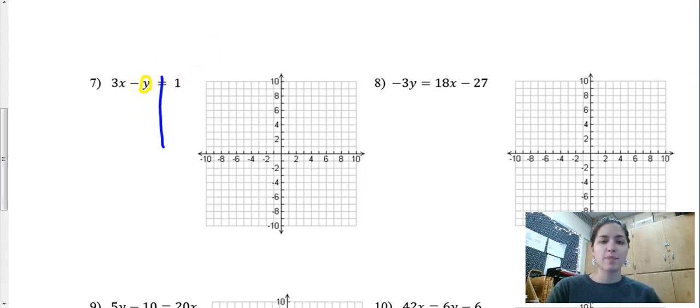So I ask myself is there something I could add or subtract. I see this positive 3x hanging out over here. I'm going to subtract 3x from both sides.